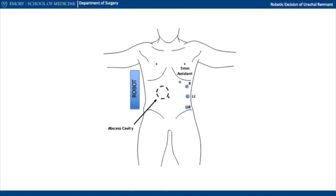Once in the operating room, a side dock was performed on the patient's right with a 12mm camera port in the left mid-abdomen and two 8mm robotic ports on either side, as well as a 5mm assistant port near Palmer's point, triangulating on the abscess cavity depicted with the hash circle on the diagram shown.